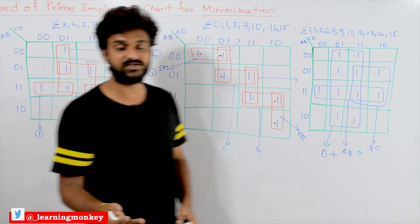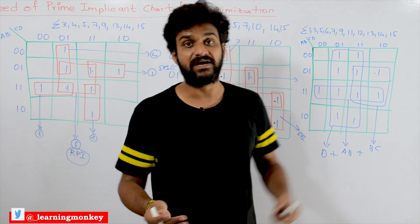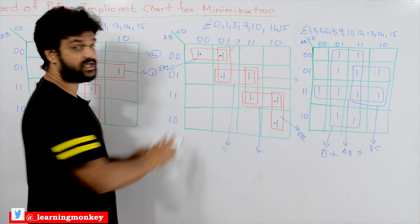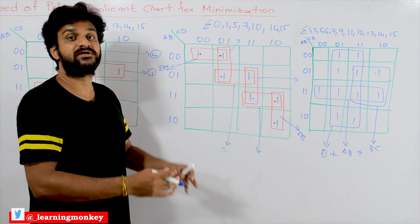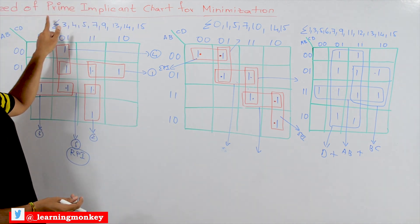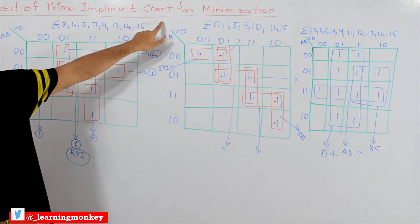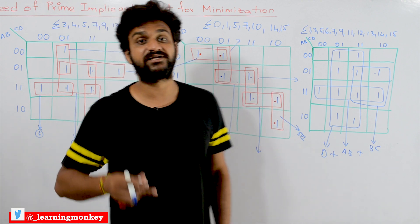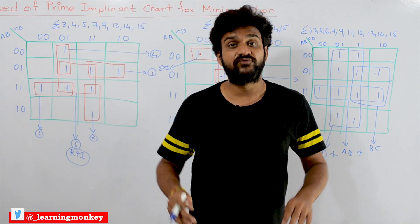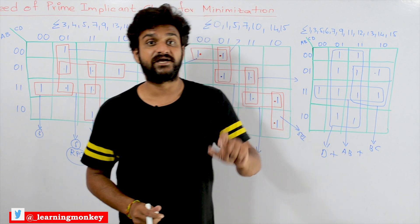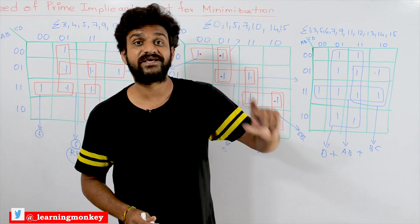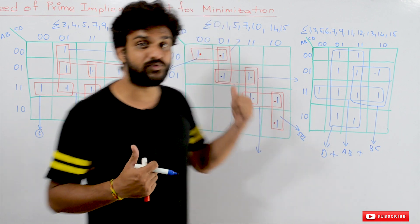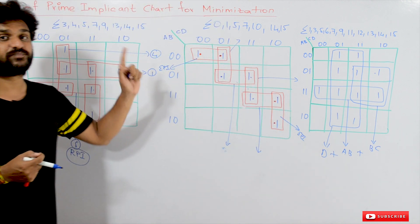In order to avoid that confusion, there is a method called the prime implicant chart method. How to identify the solutions — that we will try to understand in our next video. Right now, we are trying to understand that in order to minimize K-maps, there is a need for a prime implicant chart. These are the examples which prove that need.